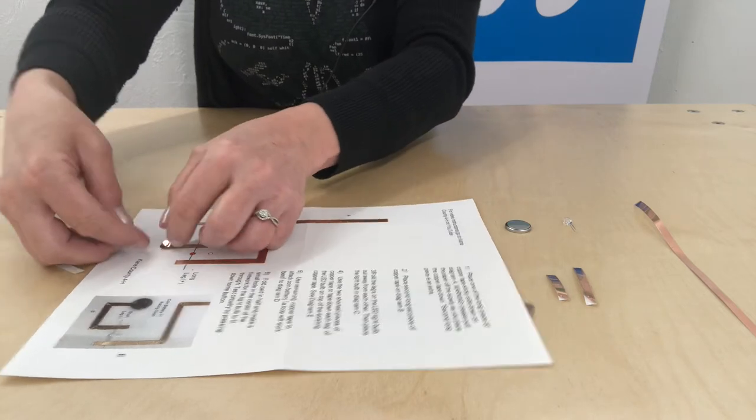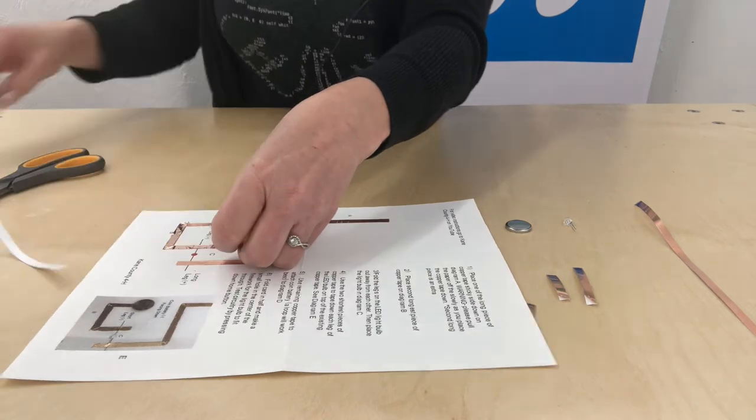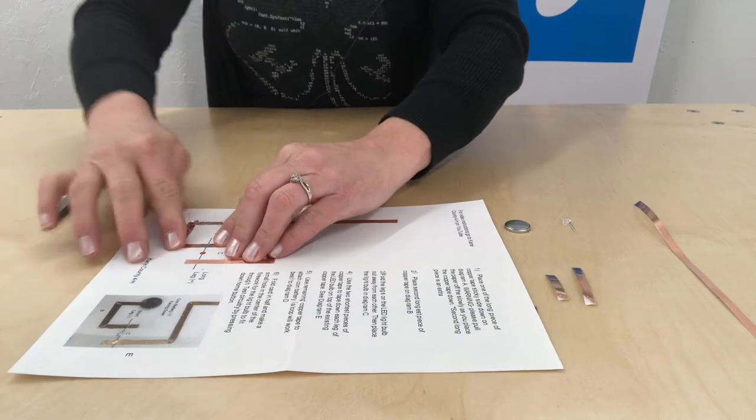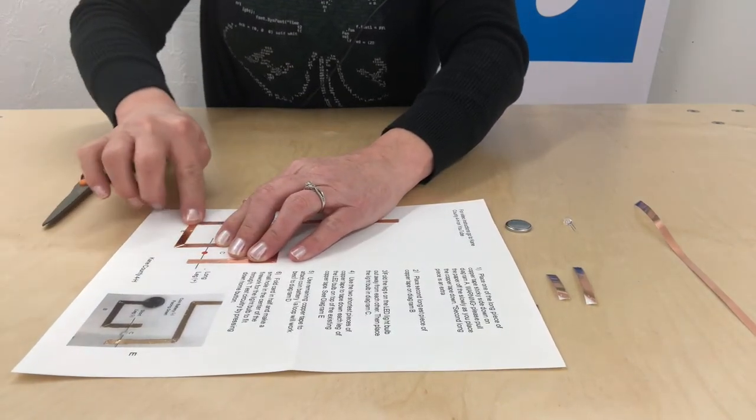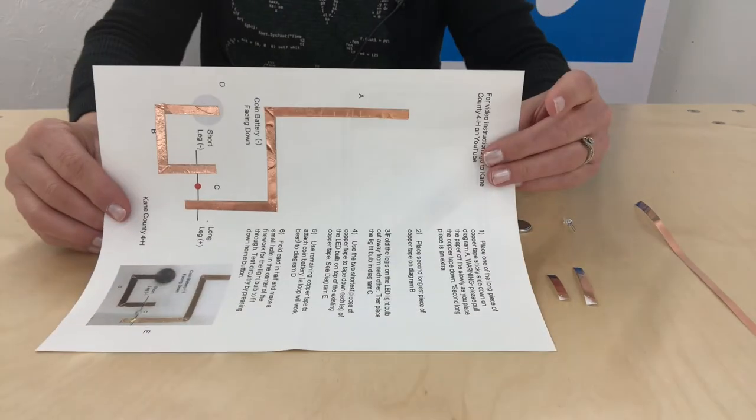Those corners can be tricky, so just take your time. And then again, you can just clip off the excess. I'm going to go back and press that down really good because I have a few creases in my tape, but this is what it should look like.